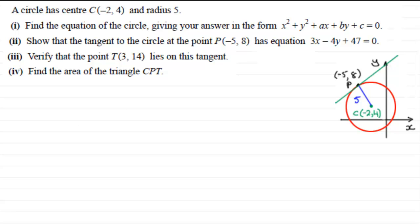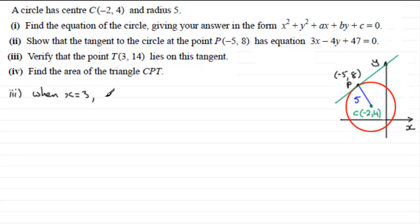To verify that the point T with coordinates (3, 14) lies on the tangent, we've got this equation here. What I'm going to do is substitute x equals 3 and y equals 14, the coordinates of point T, and hopefully it should come to zero. If it does, then I'll know that this point satisfies the equation and it must lie on it. So for part three, when x equals 3 and y equals 14, substituting into the equation, I'm going to write 3x minus 4y plus 47 — but I'm not going to say it equals zero yet, I don't know if it does.